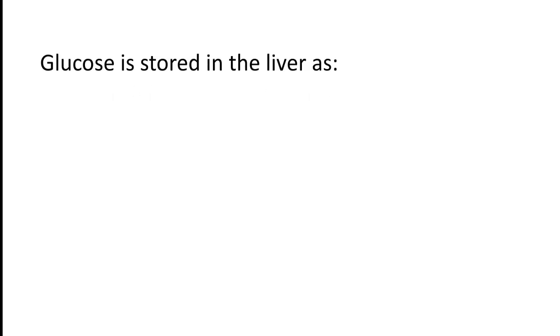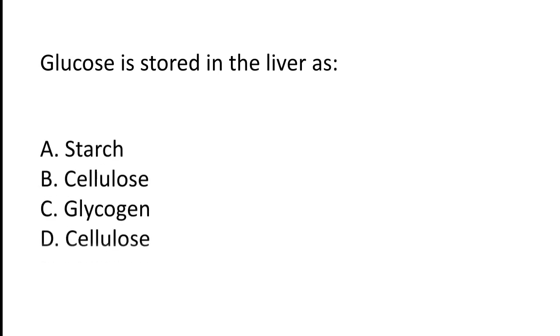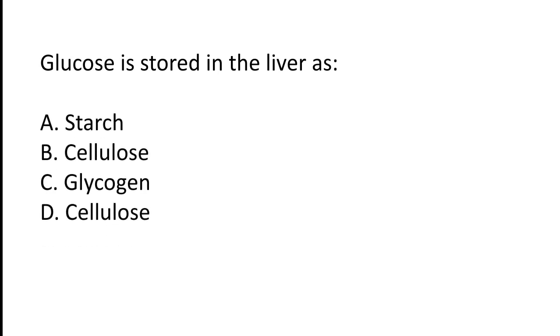Glucose is stored in the liver as: A) starch, B) cellulose, C) glycogen, D) cellulose. The correct answer is option C — glycogen. Glucose is stored in the liver as glycogen.